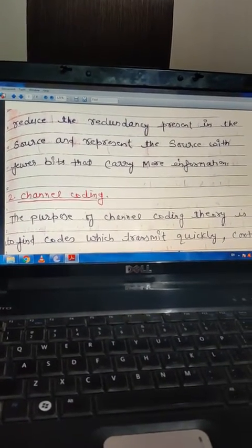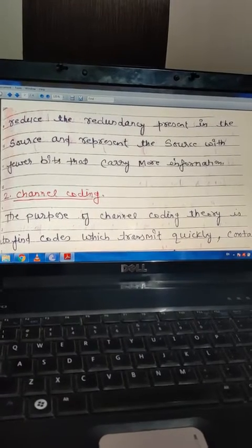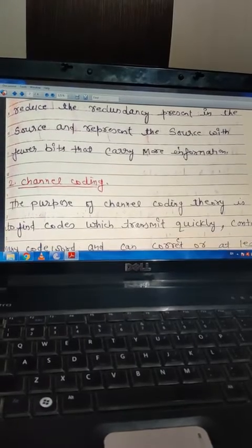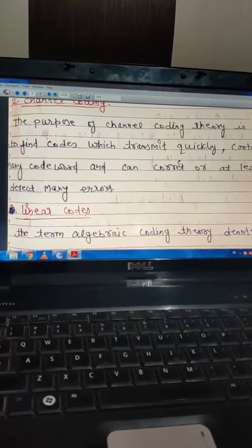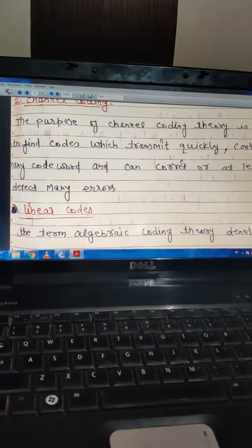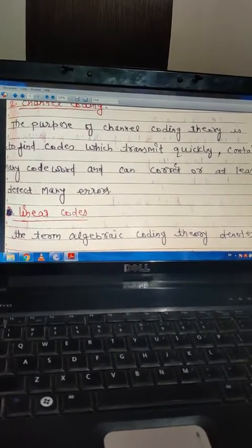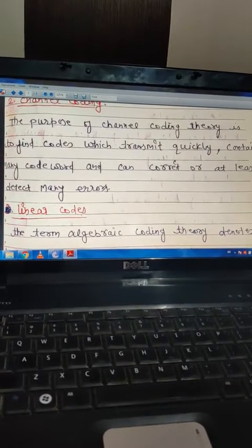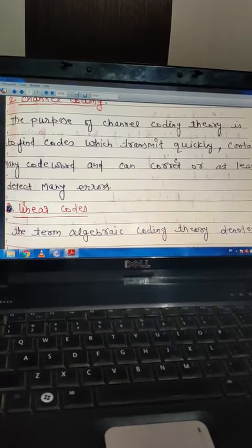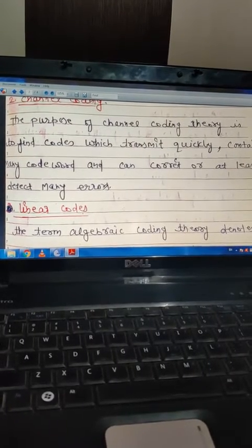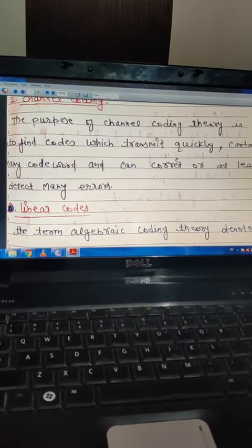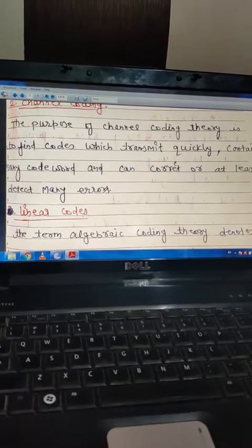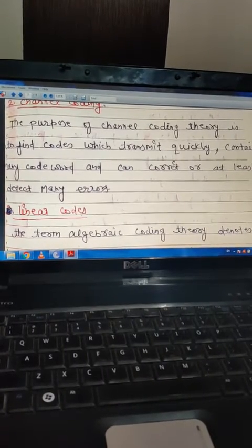Second is channel coding. The purpose of channel coding theory is to find codes which transmit quickly, contain many code words, and can correct or at least detect many errors. This is very important coding because it transmits data quickly, contains many code words, and can detect and correct errors.